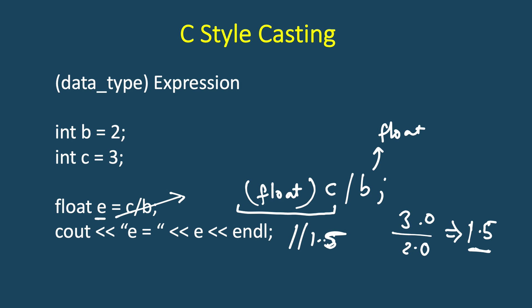If we had int e equal to this float c upon b, then the result will be 1.5, and then while saving it to an integer variable it would be converted to 1.0 or 1.